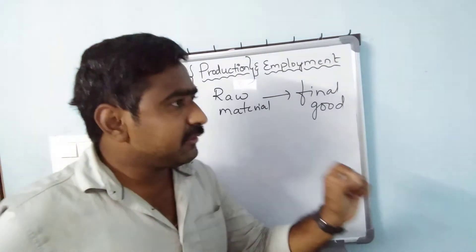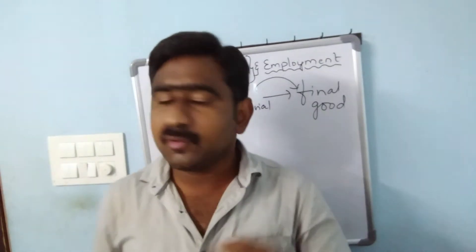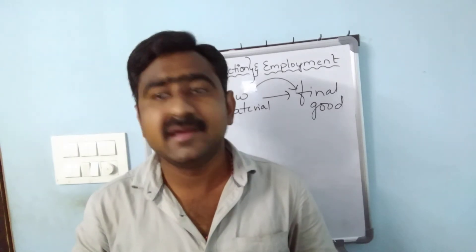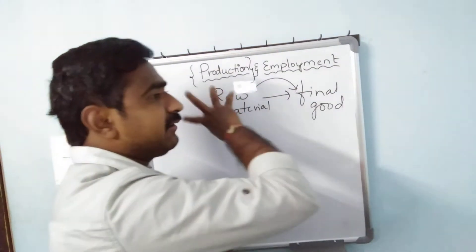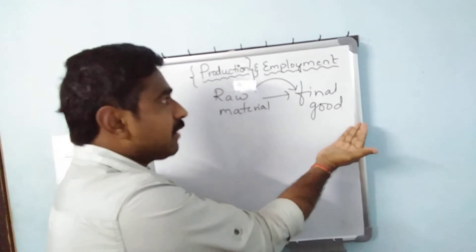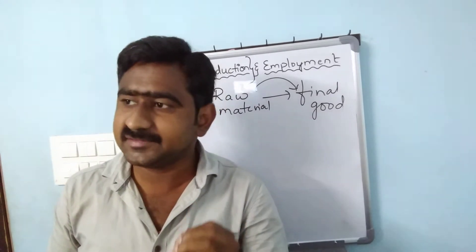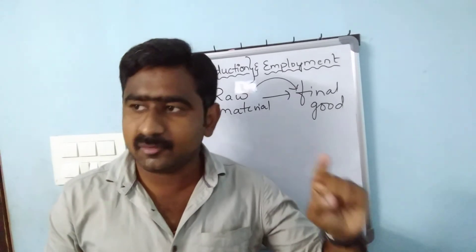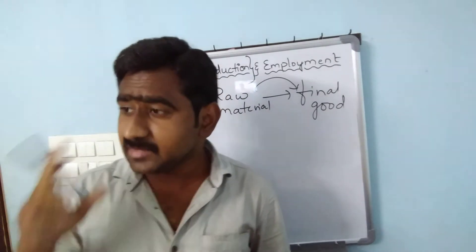For example, if you want to design a cotton shirt, the raw material is cotton. By applying human labor force or machine force, we are converting that cotton into a cotton shirt. So here, the cotton shirt is the final good and cotton is the raw material. That process of converting raw material into a final good is called production.